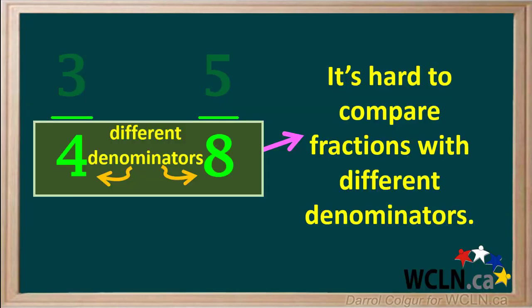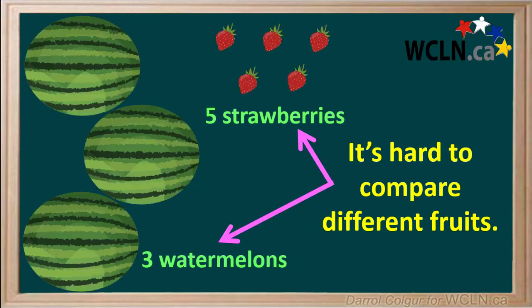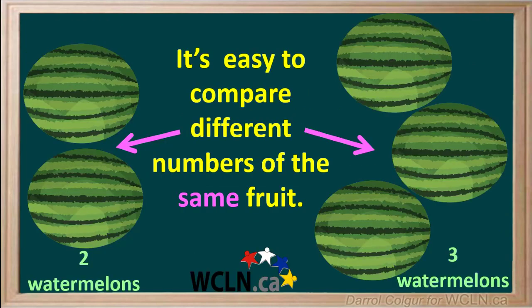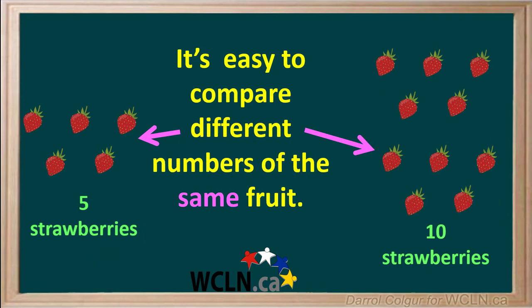So as you can see, it's hard to compare fractions with different denominators, just like it's hard to compare numbers of different fruits. But it's easy to compare different numbers of the same fruit. Two watermelons is obviously less to eat than three watermelons, and five strawberries is less to eat than ten strawberries.